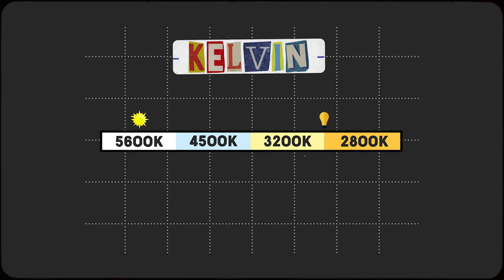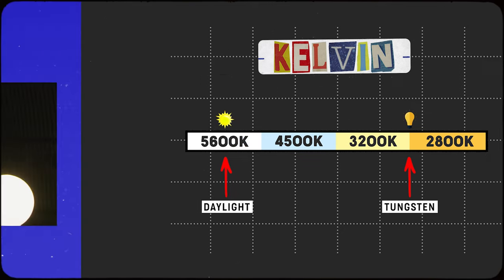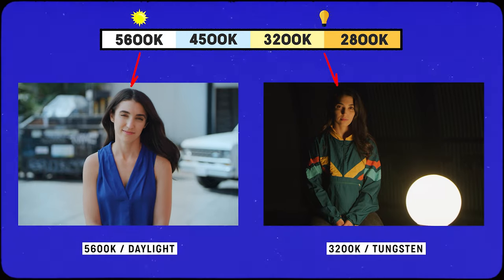Color temperature is often referred to on the Kelvin scale. On one end you have 2800 or 3200 Kelvin, typically called tungsten. On one side of the Kelvin spectrum you have that warmer light — to the eye it feels warmer — and on the other side you have 5600 Kelvin, which to the eye feels cooler. These are the two color temps you want to keep in mind.